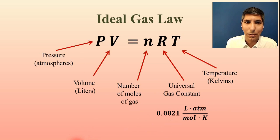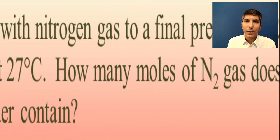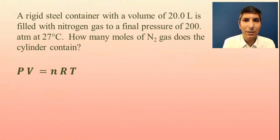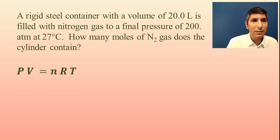We're going to do a few examples together here in the video to see how we understand the ideal gas law. So we have a rigid steel container with a volume of 20.0 liters, and it is filled with nitrogen gas to a final pressure of 200 atmospheres at 27 degrees Celsius. How many moles of nitrogen gas does the cylinder contain?